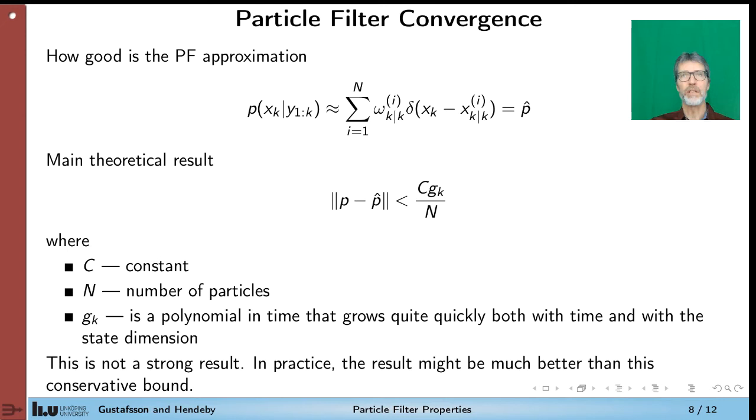Now to some mathematical properties of the particle filter. So there are a lot of literature on this and unfortunately it's not a strong result. But anyway, one can show that the approximation we get from the particle filter is quite close to the filtering density in the sense that the norm between these two probability density functions is less than some constant c times g_k over N. So the good news is that if you just increase N, you will get a very small bound here. The downside is this g_k here. So c is the constant, but g_k is polynomial in time. So it goes quickly in time, but it also goes quickly with state dimension. And that's another limitation of the particle filter, that for large state vectors it performs quite badly.